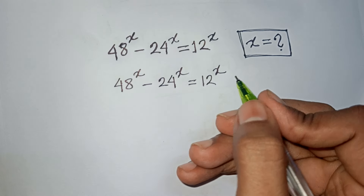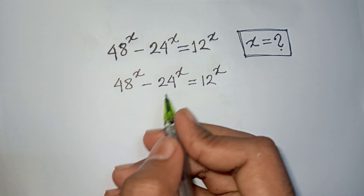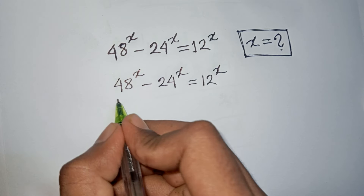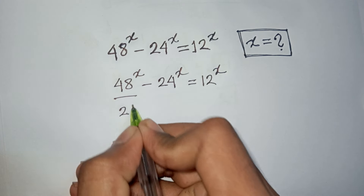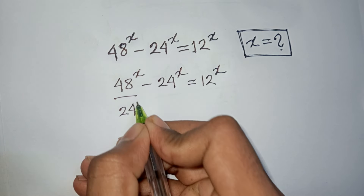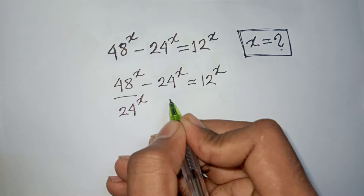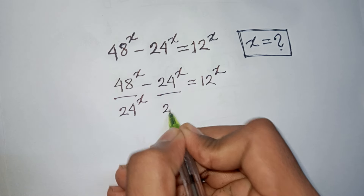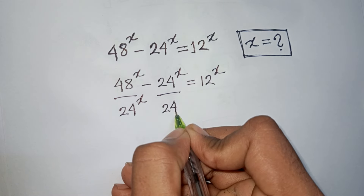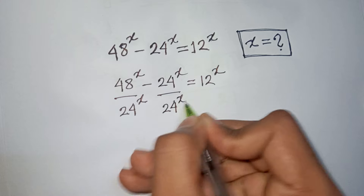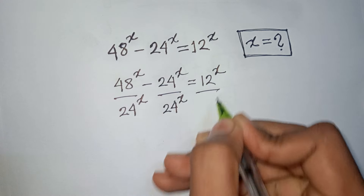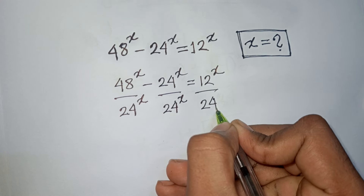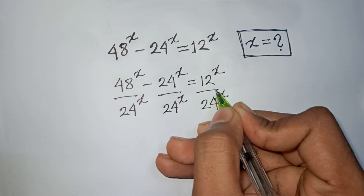We divide both sides by 24^x. So divide 48^x by 24^x, divide 24^x by 24^x, and divide 12^x by 24^x.